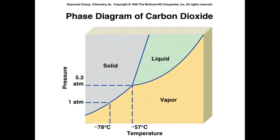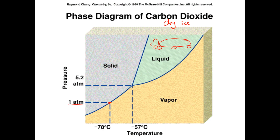Here is the phase diagram of carbon dioxide. Dry ice is dry because at one atmosphere — normal atmospheric conditions — CO₂ goes straight from solid to vapor. But you can have liquid carbon dioxide. You've likely seen it on the interstate in tanker trucks. They achieve liquid CO₂ by raising the pressure above the triple point — for example, at around 10 atmospheres — and getting conditions into that liquid phase region.